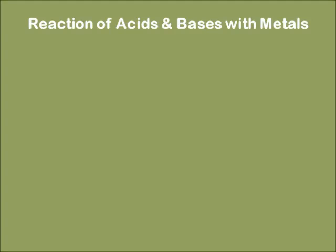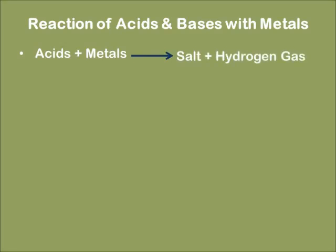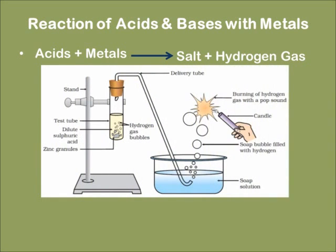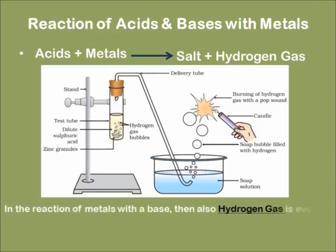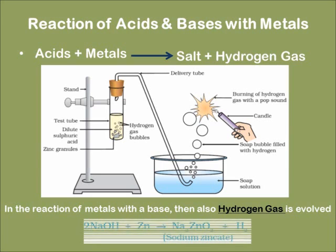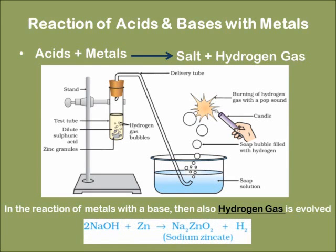Now let's see the reaction of an acid and a base with a metal. Given any acid, when it reacts with a metal, we usually get a salt and hydrogen gas is released. Given below is the setup where zinc granules react with dilute sulfuric acid and hydrogen gas is evolved. Similarly, in the reaction of metals with a base, hydrogen gas also gets evolved — the example has been given below.